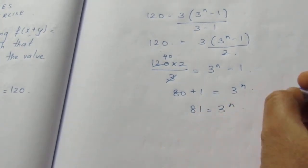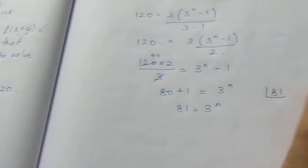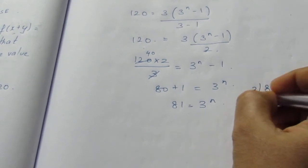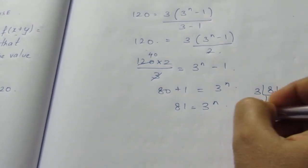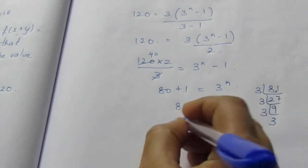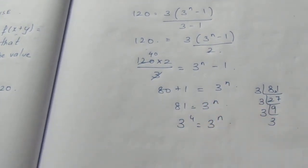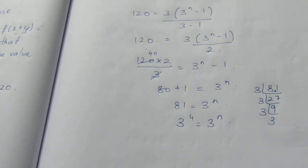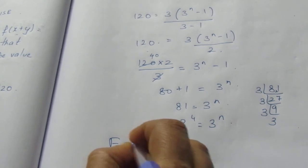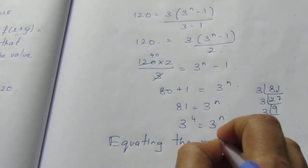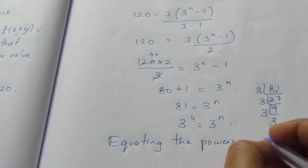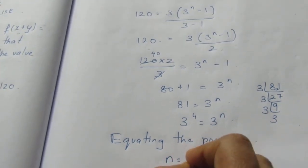We need to do prime factorization of 81. It's divisible by 3 repeatedly. So 3^4 equals 3^n. Since the bases are the same, we can equate the powers. Equating the powers, we find n equals 4.